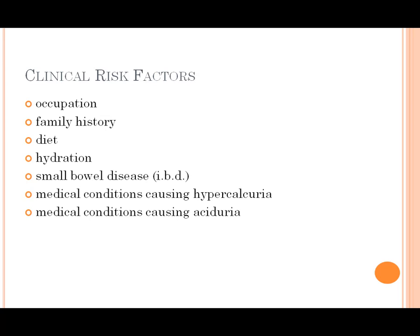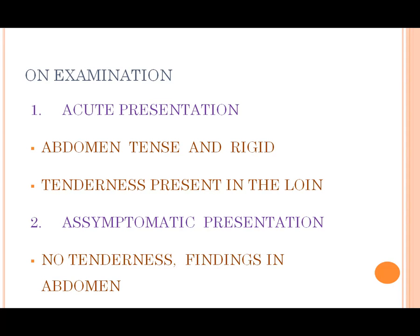Clinical risk factors include occupation, family history, diet, hydration, small bowel disease, and medical conditions causing hypercalcemia, and acid urease. On examination: acute presentation shows abdomen tense, rigid, and tenderness present. Asymptomatic presentation shows no tenderness, no abdominal findings.